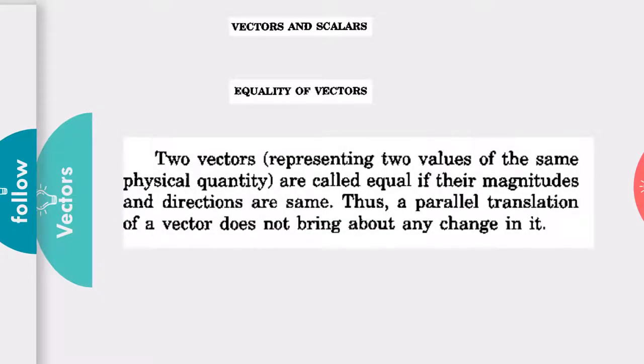As in the last part, we have seen what is vector and what is scalar. Today we are going to see equality of vectors. Equality of vectors means two vectors are said to be equal only if their magnitude